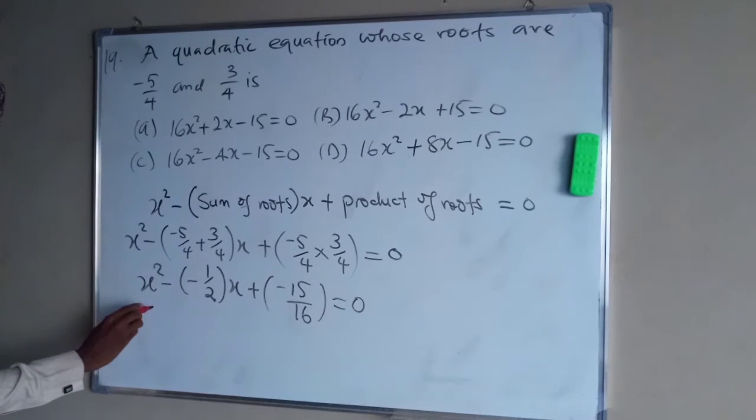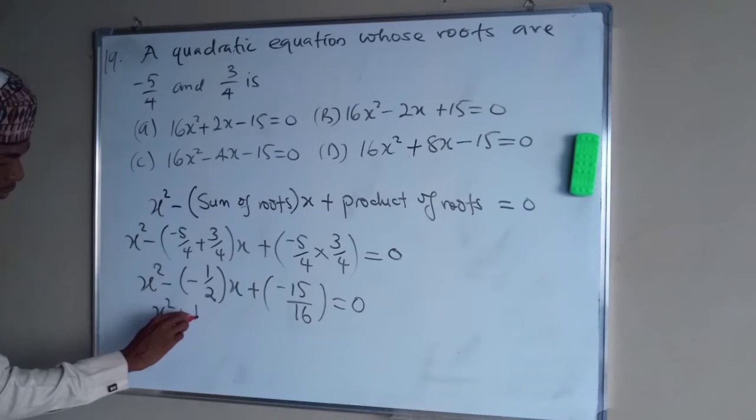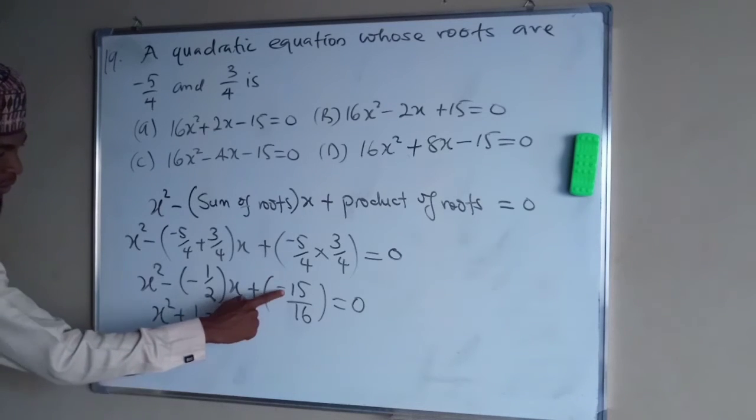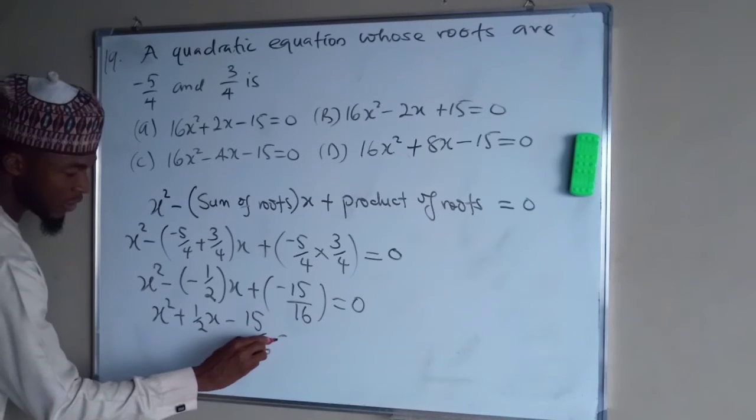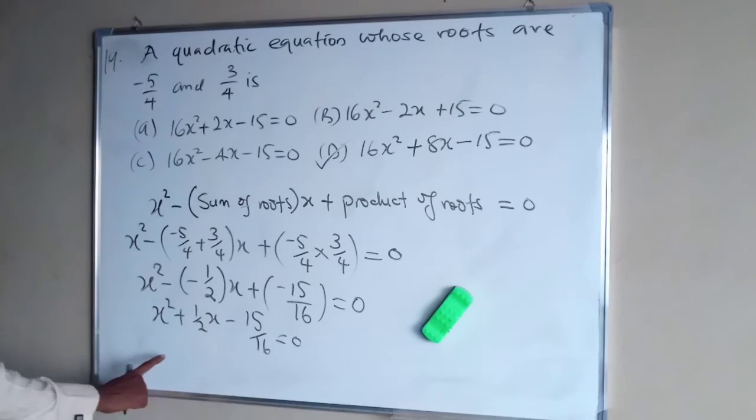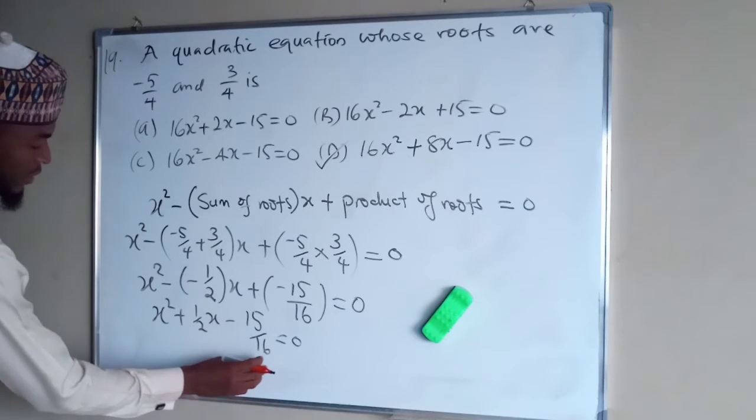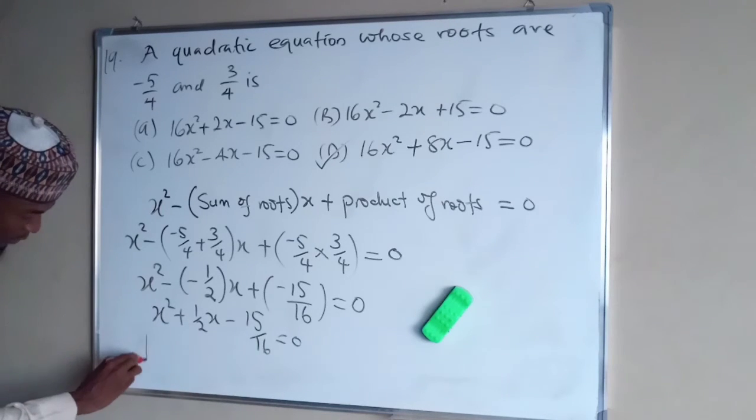Minus minus we have plus. X squared plus 1 over 2 x. This is minus, stronger than plus. We have 15 over 16 equal 0. Then we multiply this times by 16, which is the LCF.